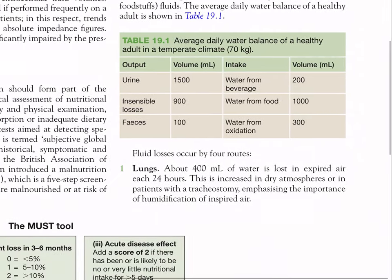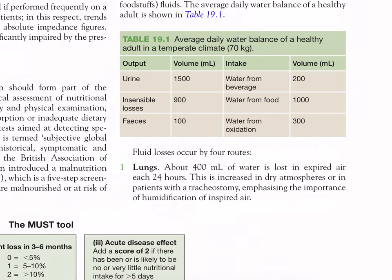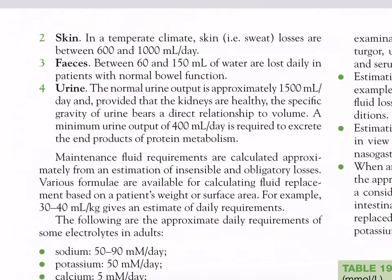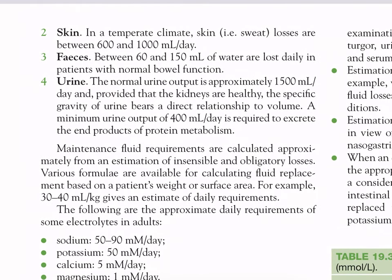Fluid losses occur by four routes. Lungs: about 400 ml of water is lost in expired air each 24 hours, increased in dry atmosphere or in patients with a tracheostomy, emphasizing the importance of humidification. Skin: sweat losses are between 600–1000 ml per day in a temperate climate. Feces: 60–150 ml of water are lost daily in patients with normal bowel function. Urine: normal urine output is approximately 1500 ml per day; a minimum urine output of 400 ml per day is required to excrete the end products of protein metabolism.